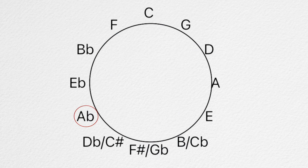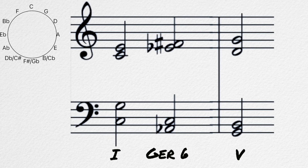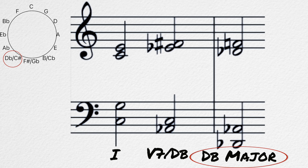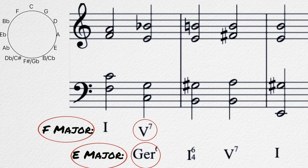This means we can use it as a secondary dominant to go somewhere else. In the key of C, the German augmented sixth could be used in the traditional sense, or it could be used to modulate to D flat major — the flat two of the key. And even more interesting: since a dominant seventh chord sounds the same as a German augmented sixth, any dominant seventh chord in any key can act as a German augmented sixth in a different key.